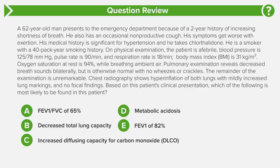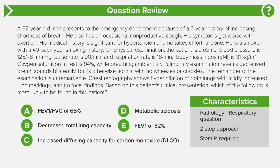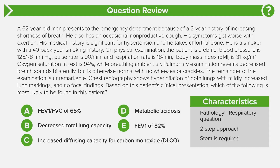Now let's jump right into this question and discuss the question characteristics. This is a pathology question — we have someone who is smoking with shortness of breath and cough affecting the lungs, so this is respiratory pathology. This is a two-step question: we have to determine the diagnosis of the patient and the lung function test result we would expect, using the history, laboratory findings, and radiograph findings to better understand the condition.